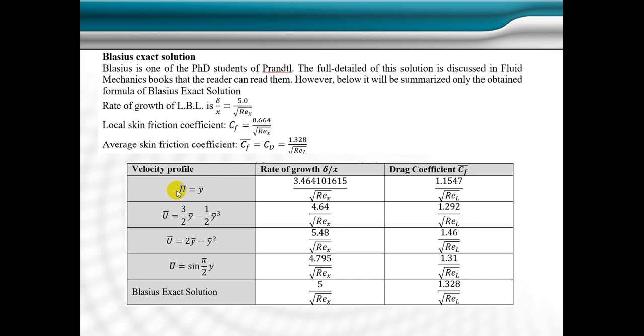For this linear velocity profile, the rate of growth relation is in terms of local Reynolds number, as indicated here. The drag coefficient also is this value, but when the velocity profile had been changed to this profile, this relation will be like this.